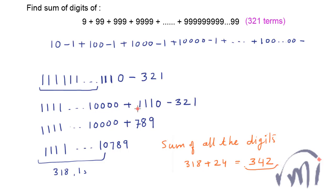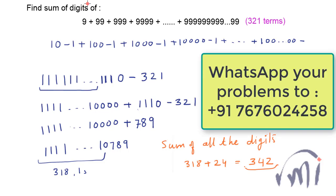So 342 is the sum of all the digits of the number when you solve this series. That's all for this video — it was an interesting problem. Thank you Sumana for sending this problem. If you also have a problem you need a solution for, you can send it to the number shown on the screen. For many more interesting videos, keep watching MathSmart, subscribe, and bye-bye till then.